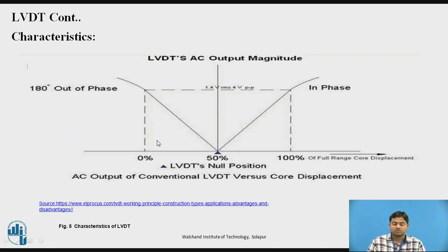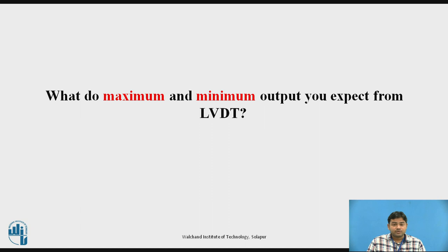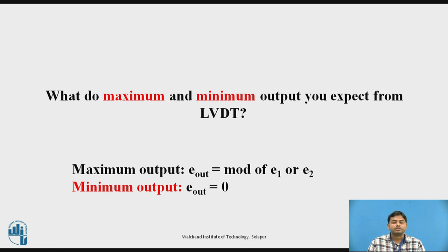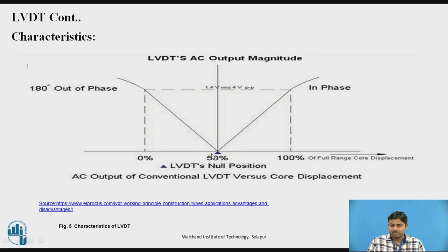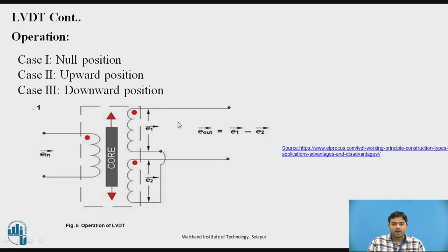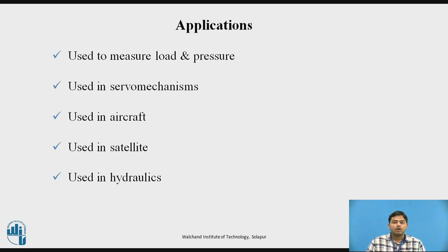Here is an interesting question: what will be the maximum and minimum output you expect from the LVDT? Think about it. The answer is: the maximum output is the magnitude of either E1 or E2 — the maximum amplitude of the signal at the output. The minimum output is zero, which corresponds to the null position. So minimum output is zero and maximum output is the mod of E1 or mod of E2.